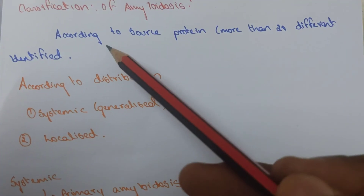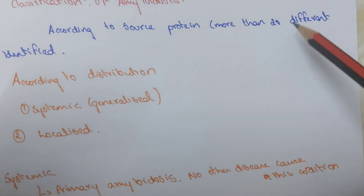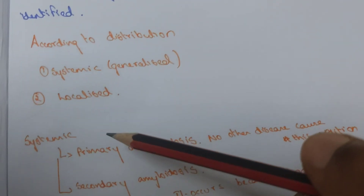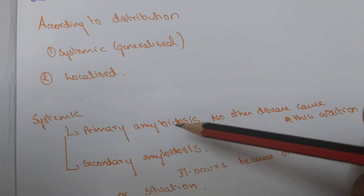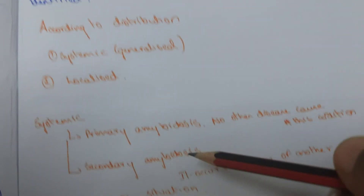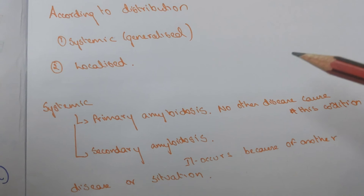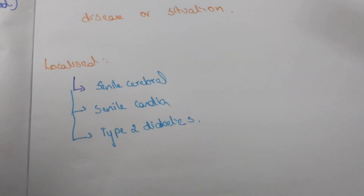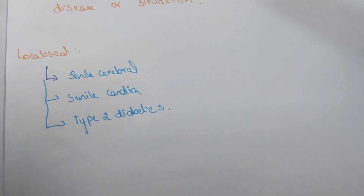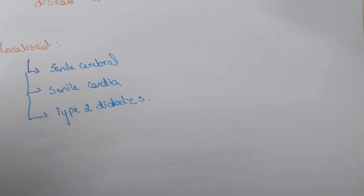Classification of amyloid: according to the source of protein, there are 20 different identified types. According to distribution, they are divided into systemic and localized. Systemic is divided into primary and secondary amyloidosis. Secondary amyloidosis occurs because of another disease or situation. Localized types include senile cerebral, senile cardiac, and type 2 diabetes. Thank you — for more videos please subscribe, like, share, and comment.